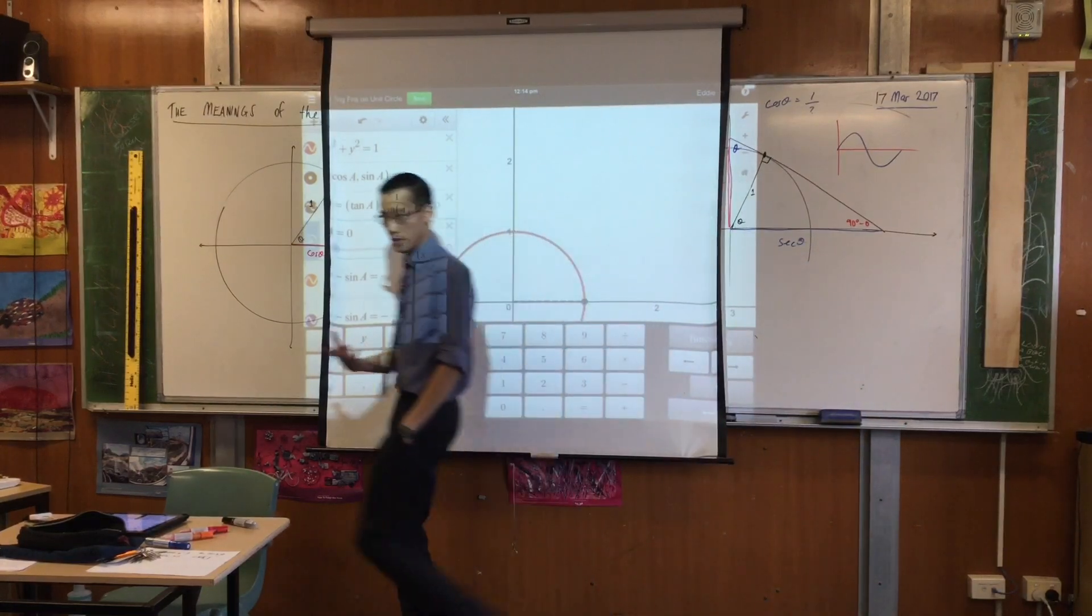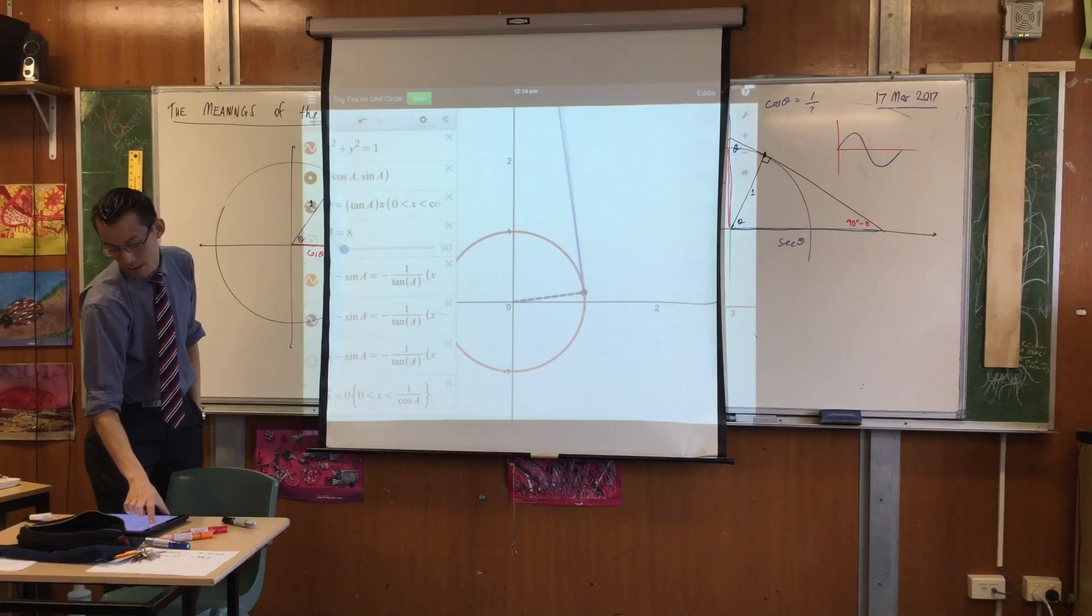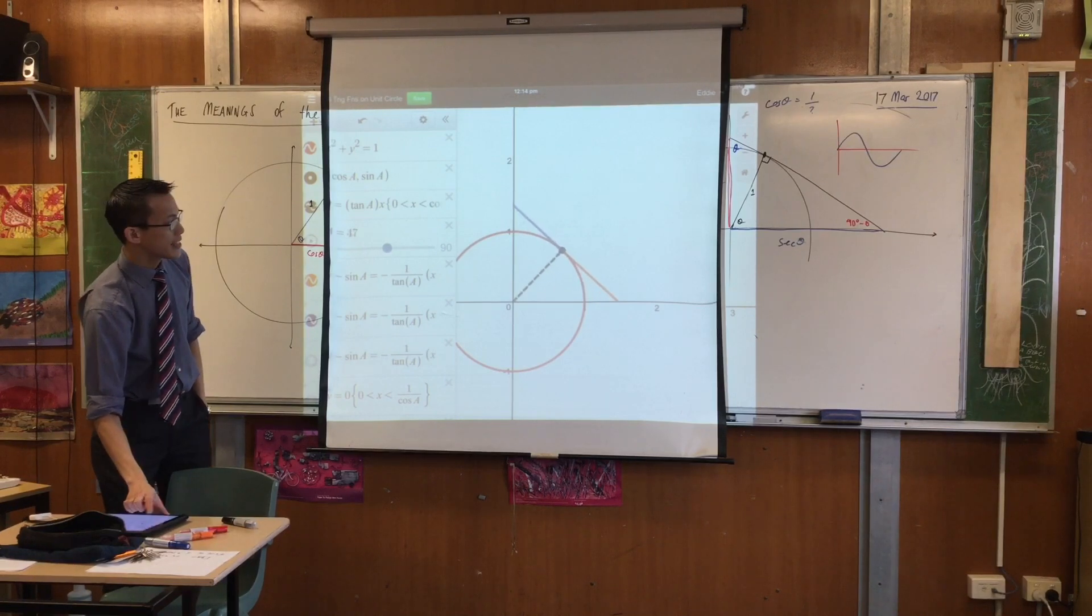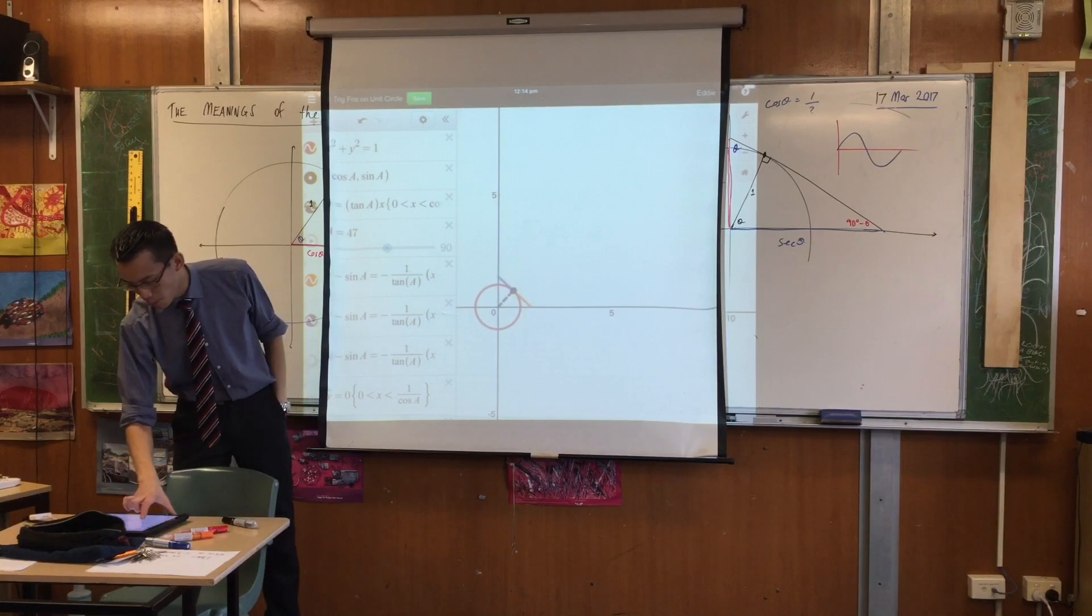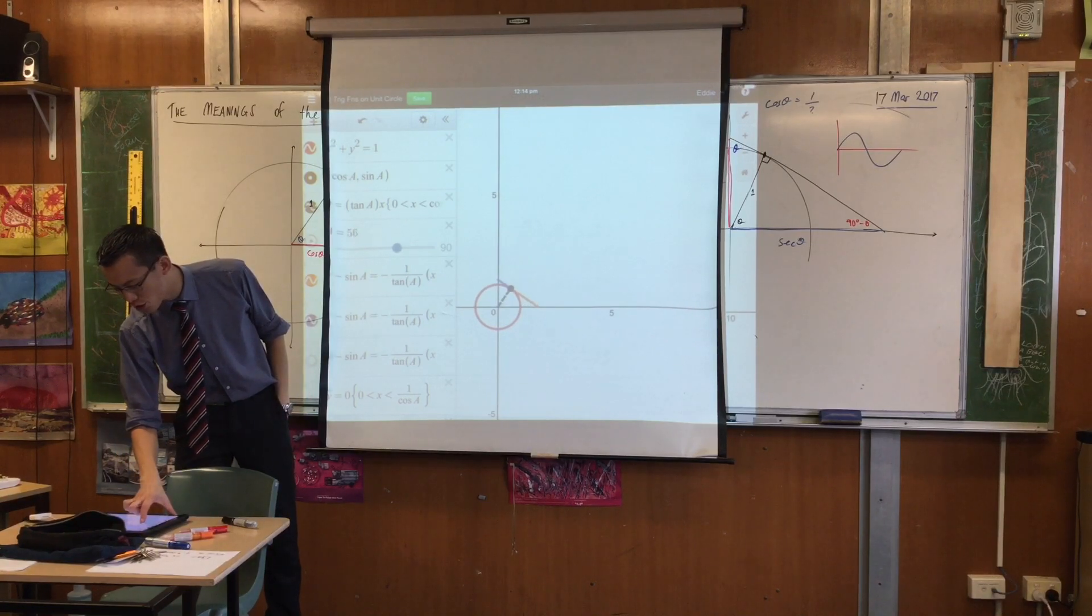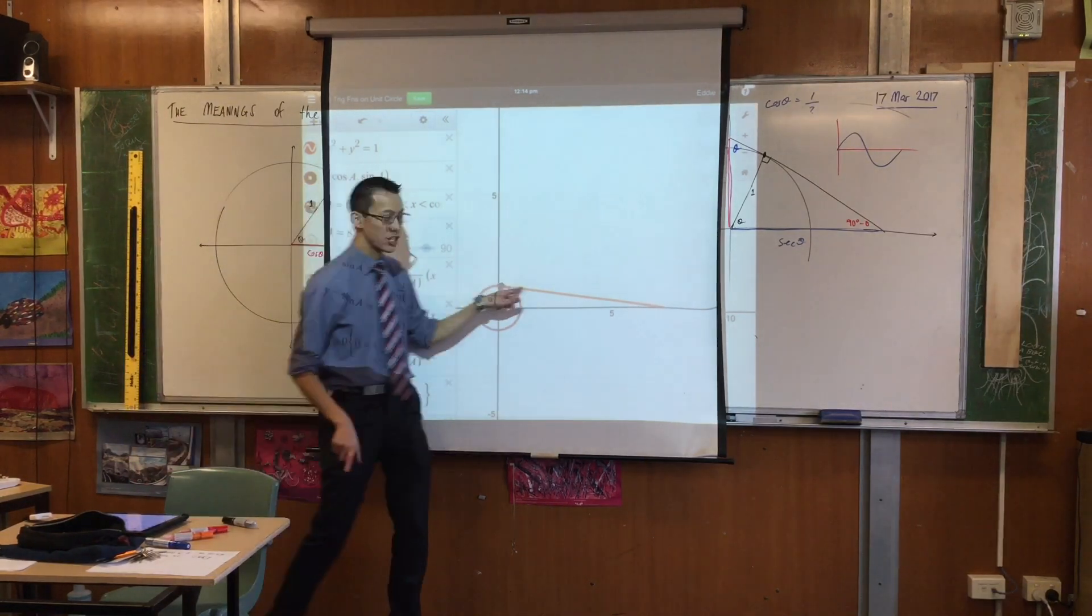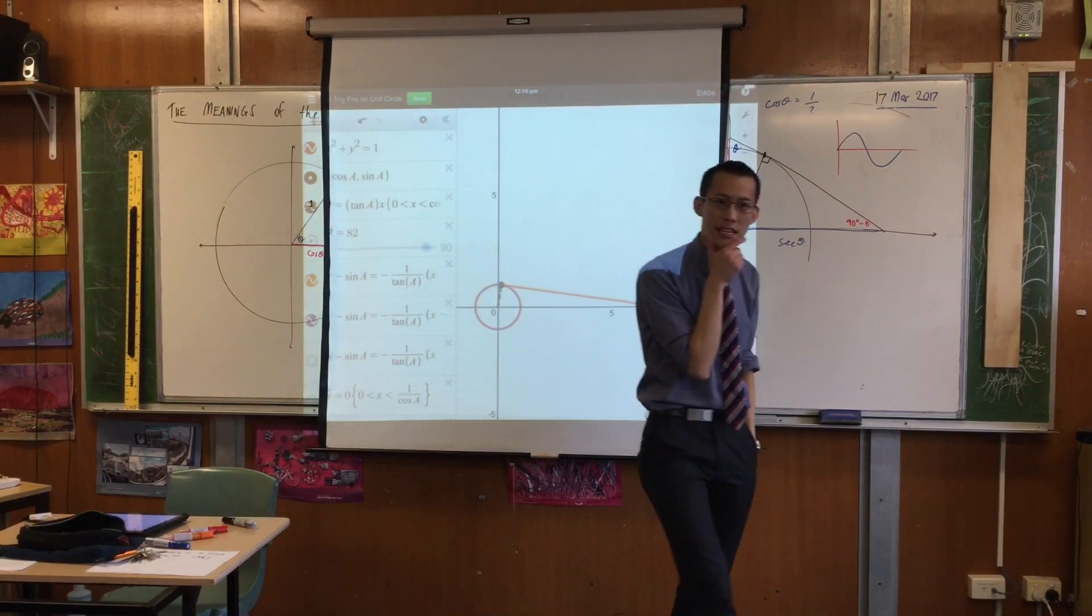As theta increases, what happens to tan theta? As theta increases, tan theta gets bigger, and bigger, and bigger. At a certain point, it doesn't just start growing slowly. Let's zoom out a little bit. At a certain point, its growth just skyrockets. Like that. Do you see how little I have to drag this, and how much longer that gets?